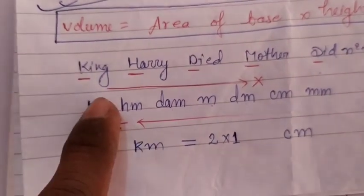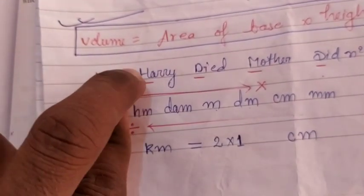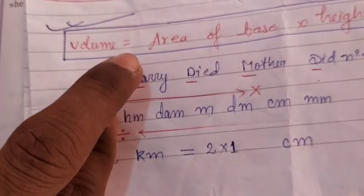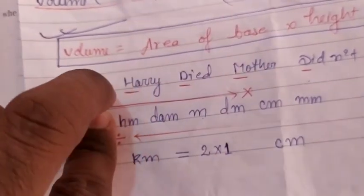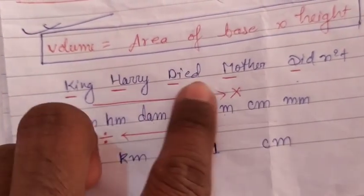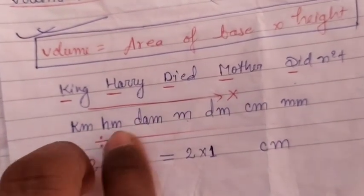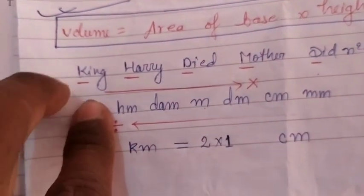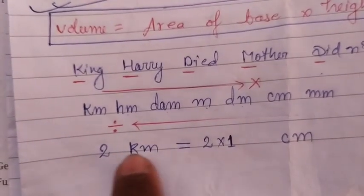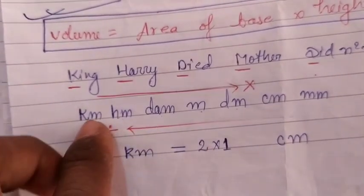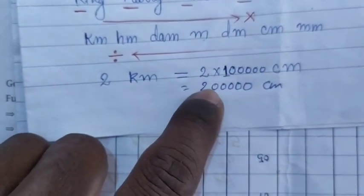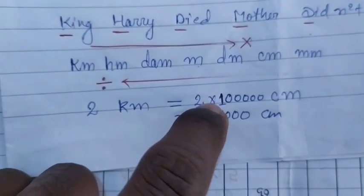Think of it like leaving your house — you close the door and count the steps. From kilometer to centimeter is five steps. Since we go left to right, we multiply: 2 × 100000 (five zeros) = 200000. So 2 kilometers equals 2 lakh centimeters.